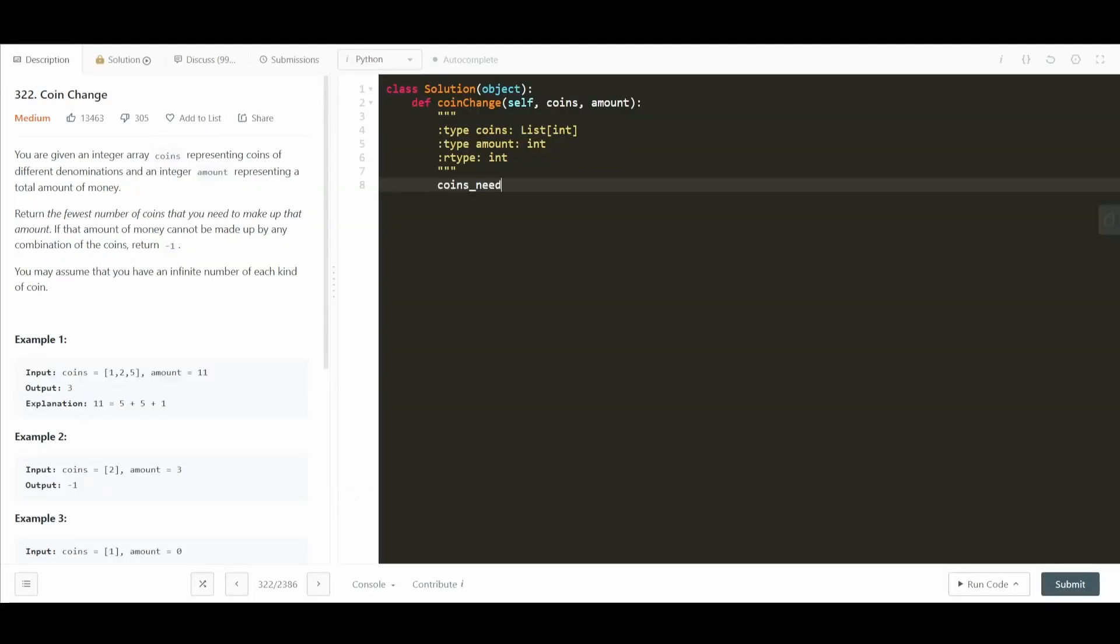First let's start out by creating our data structure here. So we'll call it coins_needed. Now we need to loop through all the way up until amount. So this is going to be for i in range starting from 1 all the way up until amount plus 1, because we need to include amount. And now we loop through each coin. So for coin and coins, now this is where the algorithm is a little tricky.